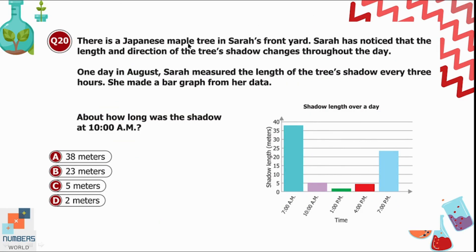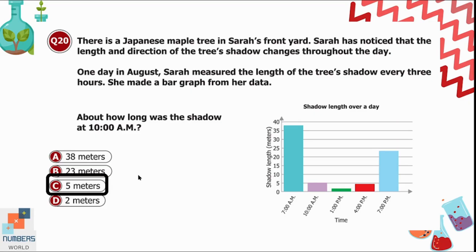Question 20: Sara noticed the length and direction of a Japanese maple tree's shadow changes throughout the day. One day in August she measured the shadow every three hours and made a bar graph. How long was the shadow at 10 AM? Option A is 38 meters, B is 23 meters, C is 5 meters, D is 2 meters. At 10 AM the shadow is 5 meters, so option C is correct.